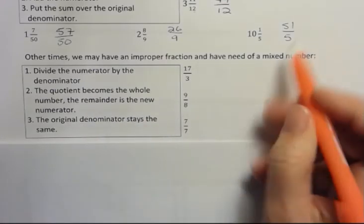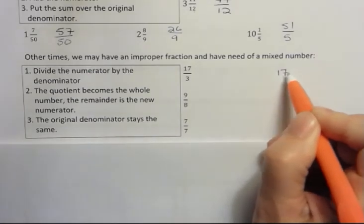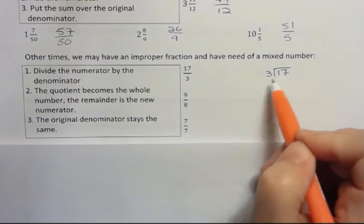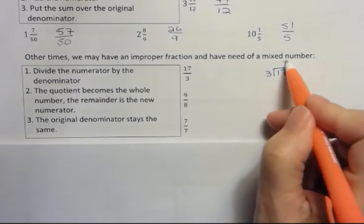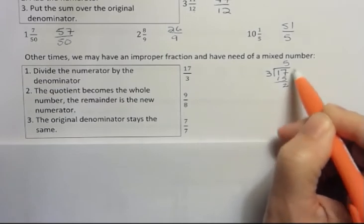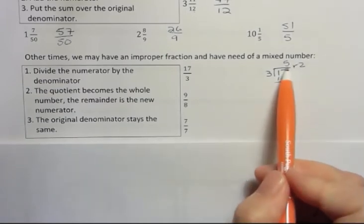So what do I mean by that? If I take 17 and divide by 3, that is the numerator divided by the denominator. 3 goes into 17 five times and I have a remainder of 2. This number, the quotient 5, that is the whole number.